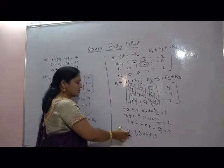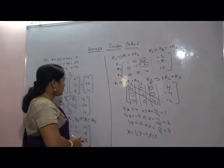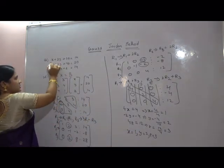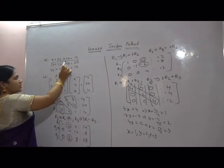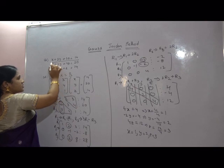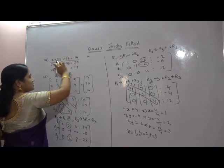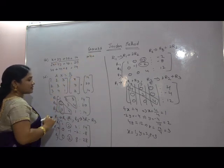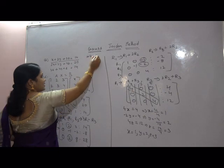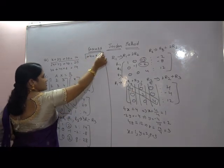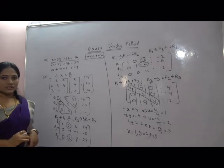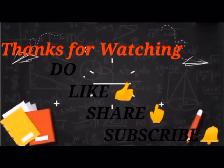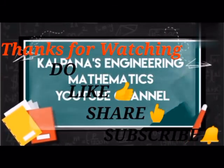You can verify the solution by substituting these values into any one of the original equations. Taking the first equation x + 2y + 3z = 14: substituting x=1, y=2, z=3 gives 1 + 4 + 9 = 14. This confirms our solution is correct. If you find this video informative, please like, share, and subscribe to my channel, and click the bell icon for quick updates.